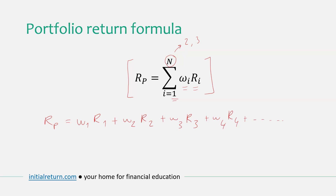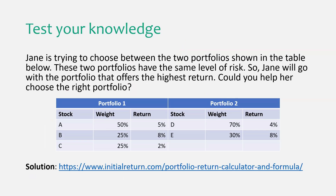Before we finish, here's an exercise to test your knowledge. Jane is an investor who has identified two portfolios with the same amount of risk, and she wants to choose the one with the highest return. Compute the returns for both portfolios and determine which one Jane should go with. You can find the solution on our website on the same page as our portfolio return calculator. In part two of this tutorial we'll be covering portfolio risk — link is in the description. Hope you found this helpful, see you in the next video!